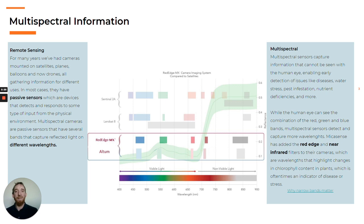Multispectral sensors can gather more information than RGB cameras because they have filters that can capture different bands on the wavelength that the human eye can see. Both the MicaSense RedEdge MX and Altum capture the same bands used in Sentinel and Landsat satellites, which have offered great results for analyzing vegetation.